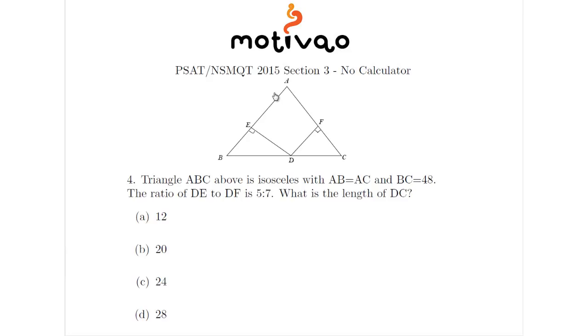How's it going guys? It's Joshua again from Multiviral with the PSAT section number three. Question number four says triangle ABC above is isosceles with AB equal to AC, and BC equals 48. The ratio of DE to DF is five to seven. What is the length of DC?